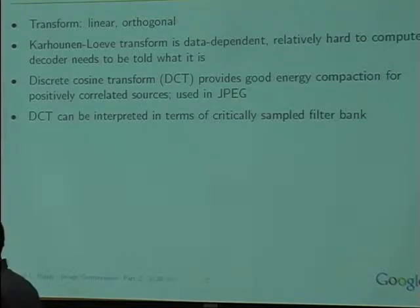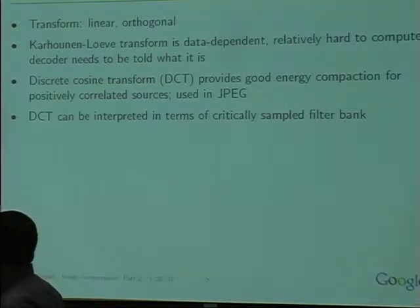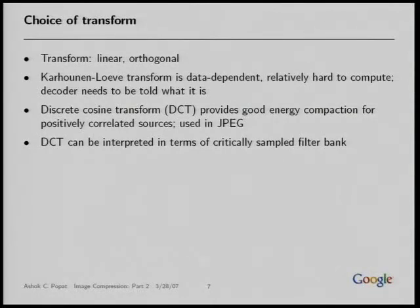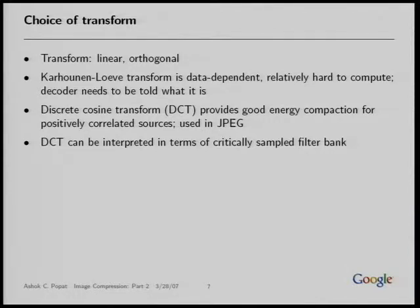One of the things we talked about was the choice of transform. We restricted consideration to linear transforms with orthonormal bases. If we want to optimize the energy compaction, we saw that the Karhunen-Loève transform, also called Principal Components Analysis, explicitly optimizes that. But that's data dependent and if you were to use it in a coder, you'd have to synchronize with the receiver using the same transform, which would mean transmitting all the information needed to specify it. So we saw that the discrete cosine transform is a one-size-fits-all approach with pretty good energy compaction.